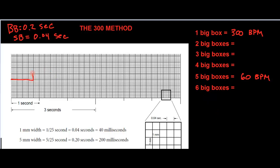What if the next QRS is two big boxes away and they're consistently two big boxes apart? If they're two big boxes apart, that means they're half the frequency of one box apart — they're twice as slow. So instead of 300 beats per minute, if they are two boxes apart, the heart rate is 150 beats per minute.